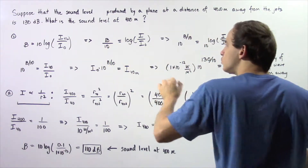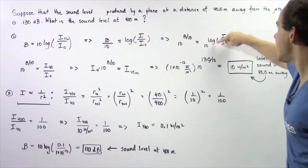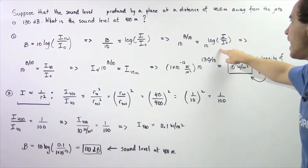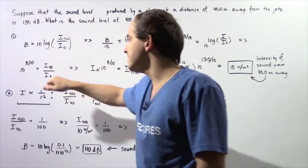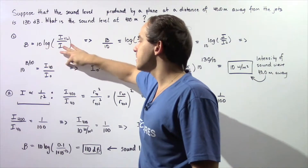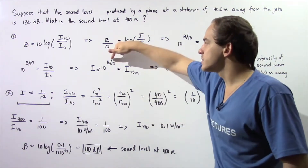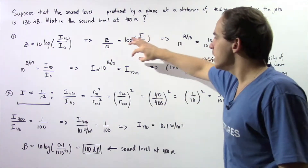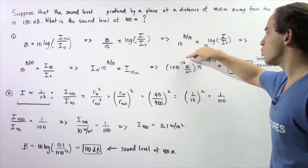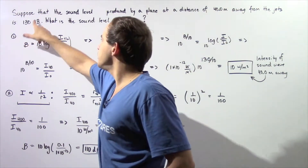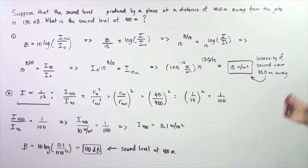We raise both sides as powers of 10, and notice that 10 log₁₀ of this ratio gives us I divided by I-naught equals 10 to the power of B divided by 10. So 10 to the power of B divided by 10 is equal to the ratio of intensity at 40 meters divided by I-naught. Multiplying both sides by I-naught, we plug in 1 times 10 to the negative 12 watts per meter squared for I-naught and 130 decibels for B, and we get an intensity of 10 watts per meter squared at 40 meters.